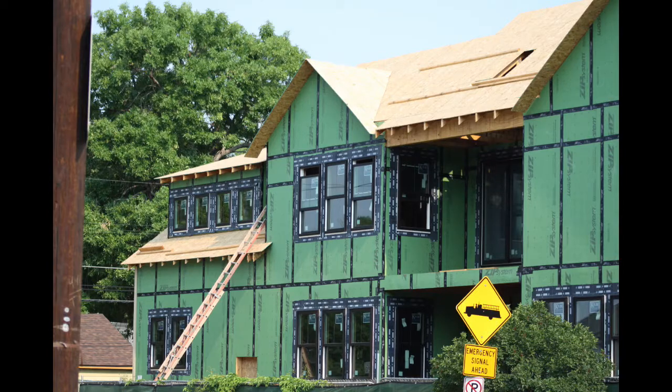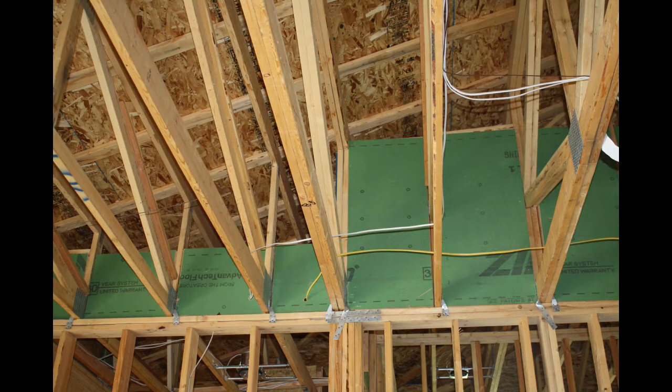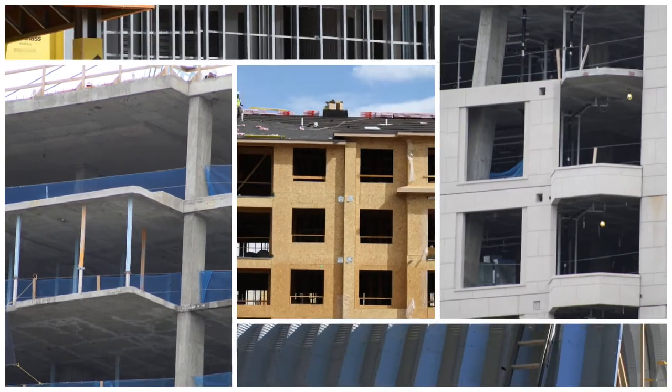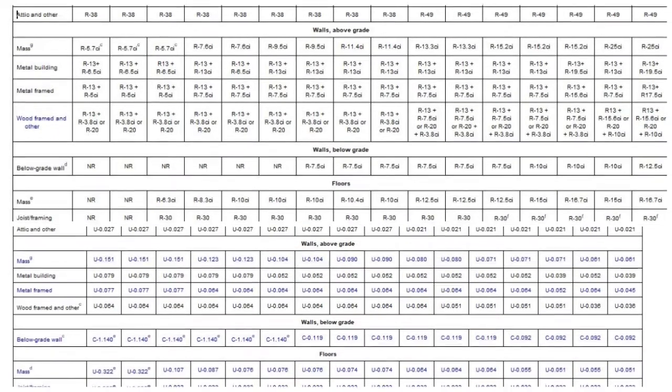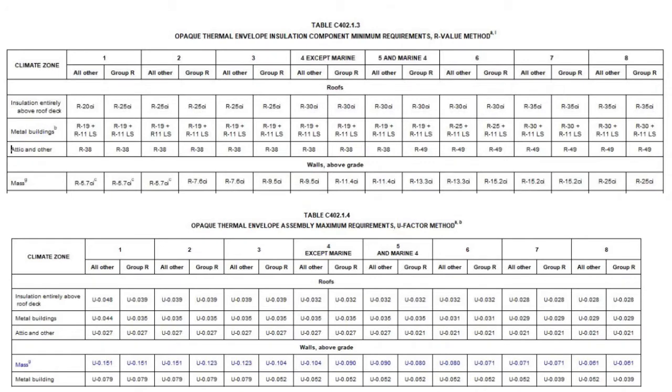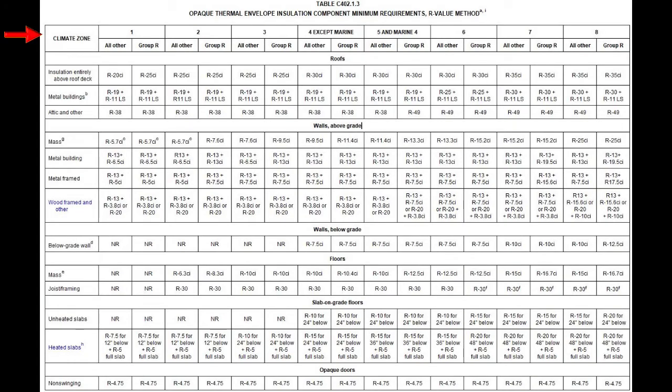Most residential projects are built out of wood, possibly some mass walls. Commercial projects have so many more factors involved with the materials that can be used, making a prescriptive table approach not practical. Commercial projects can be constructed of wood, mass walls, mass floors, steel studs, metal buildings, or any combination of these. Both tables C402.1.3 and C402.1.4 try to address this.